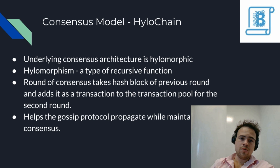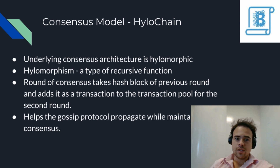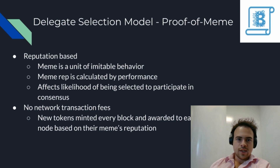The hash of the second round is added to the transaction pool of the third round as a transaction, and so on. Each new round has a hash of the previous round in it, so it all gets linked back. This is what allows the gossip protocol to propagate and what makes consensus reachable.